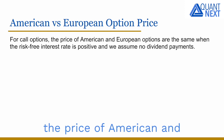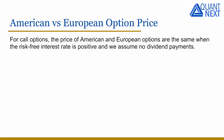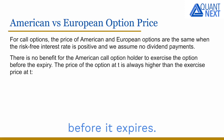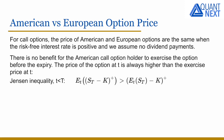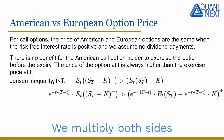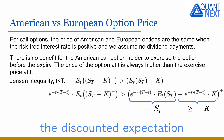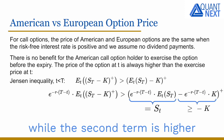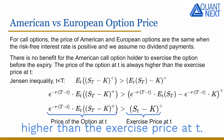For call options, the price of American and European options are the same if we assume no dividend payments and a positive risk-free interest rate. Indeed, there is no benefit for the American call option holder to exercise the option before it expires. The price of the option is always higher than the exercise price. This can be shown by applying the Jensen inequality to the expected payoff of the call option. We multiply both sides of the inequality by the discount factor. On the right side, the first term is the discounted expectation of the stock price, which is equal to the stock price at T, while the second term is higher than minus the strike price. So we get that the price of the option is always higher than the exercise price at T.